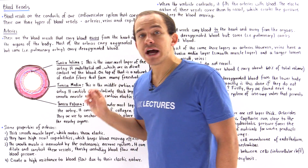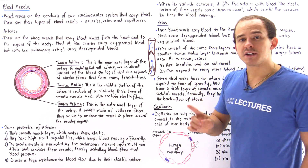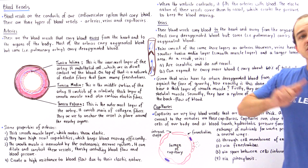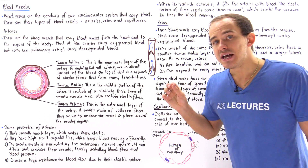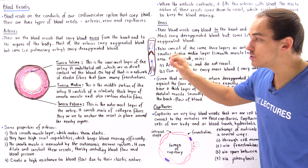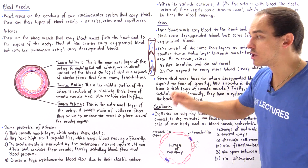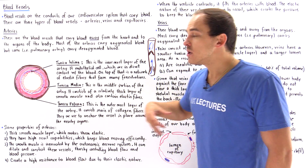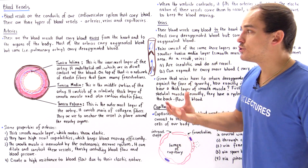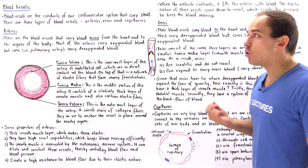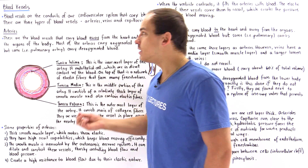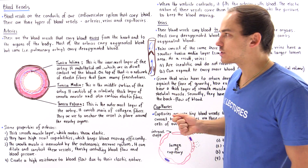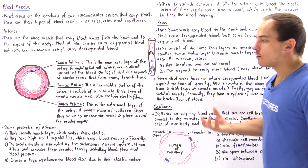Smooth muscle is innervated by our autonomic nervous system, so it's the autonomic nervous system that actually controls the dilation and contraction of our arteries. This means the autonomic nervous system can control blood pressure and blood flow through our arteries, which is very important in our body.